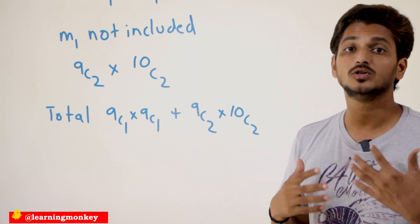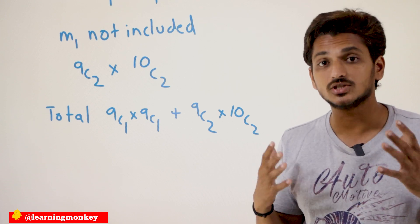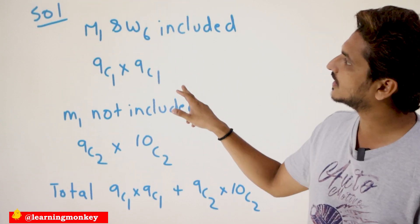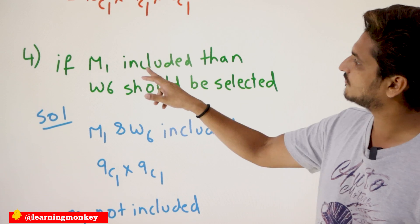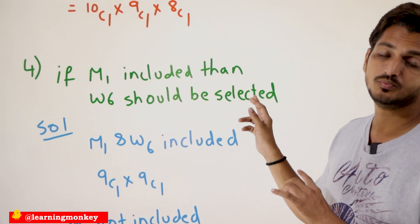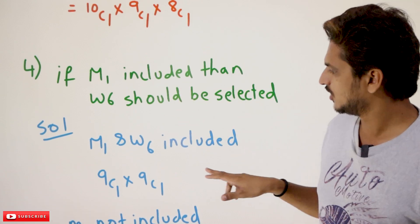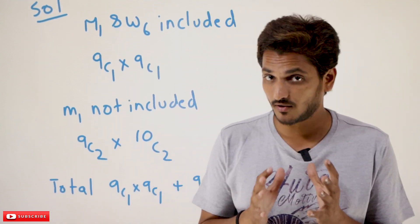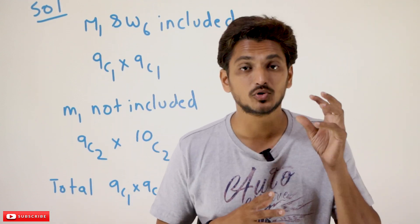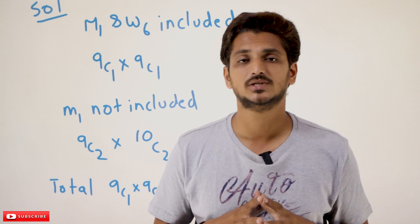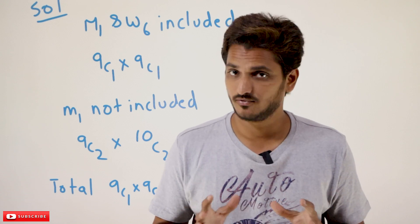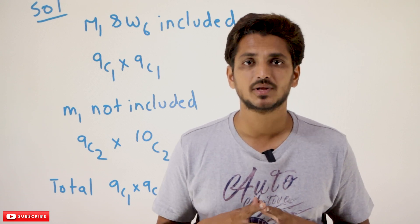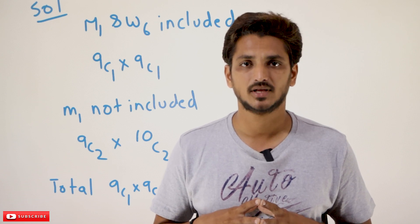These are the total possible combinations and selections for the condition: if M1 is included, then W6 should be selected. Hope you understand these examples. If you have any questions regarding the concept, please post your questions in the comment section below. Thanks for watching. If you haven't subscribed to our channel, please subscribe and press the bell icon for the latest updates. Thank you.